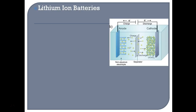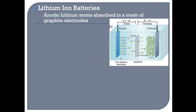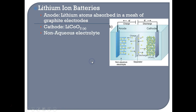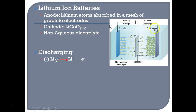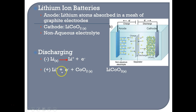A lithium-ion battery is like the battery we have in our laptops and phones. At the anode, lithium atoms are absorbed in a mesh of graphite electrodes — those little yellow dots in the diagram are lithium atoms. At the cathode, we have lithium cobalt oxide. We must use a non-aqueous electrolyte here because lithium is an alkali metal and will react violently with water. When the battery discharges, the lithium atoms at the anode are oxidized, freeing up electrons which travel through the external circuit to the cathode. The lithium ions produced flow through a separator and at the cathode are added to cobalt oxide to produce lithium cobalt oxide.